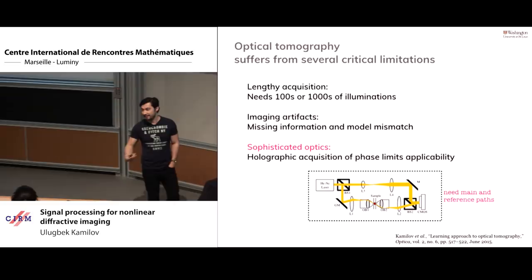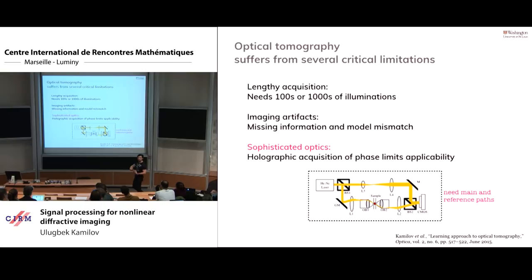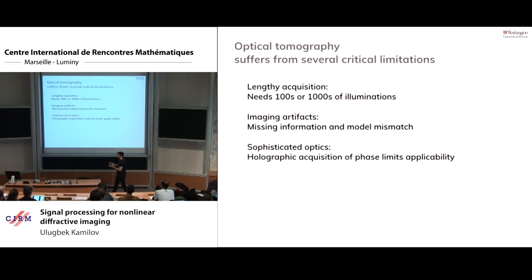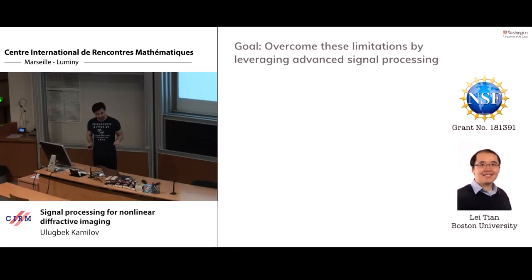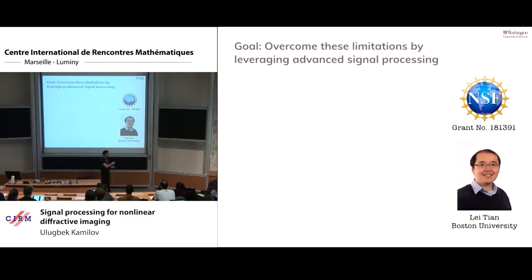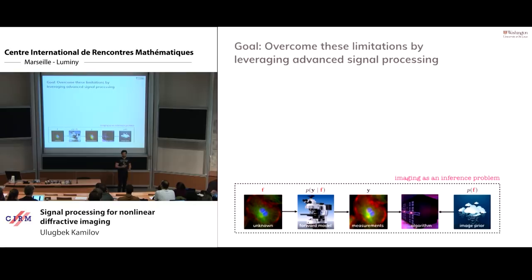The third limitation is sophisticated optics. If you want to collect the phase, you need interferometry. There is strong interest in reducing the complexity of the optical setup by compensating computationally. So those are the three drawbacks of this modality for studying biology. Our NSF-funded project with Leitian aims to use computation to overcome these limitations using the best tools from signal processing and inference.